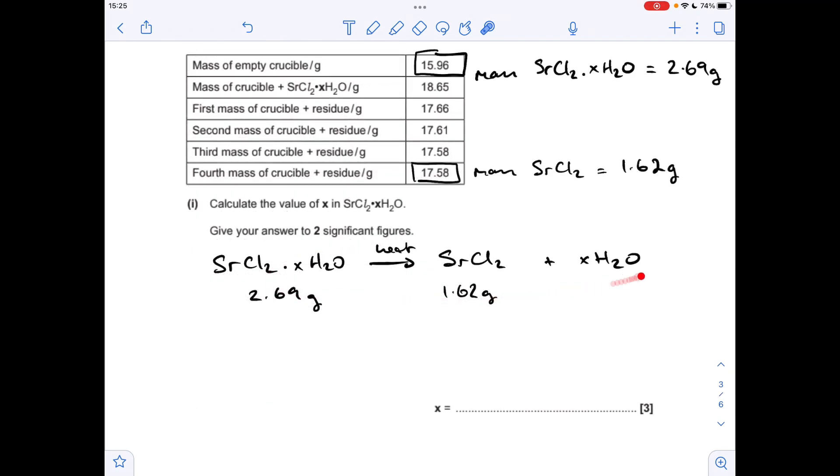I'm turning that into an equation so I've got my two masses that I've just calculated. To get the mass of water, well it's obviously going to be the difference between these two numbers which is coming out at 1.07 grams.